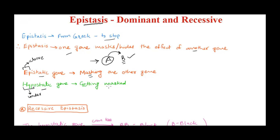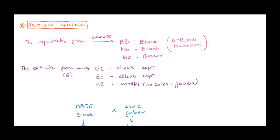There are two main types of epistasis we are going to talk about: dominant epistasis and recessive epistasis. Let's start with recessive epistasis first. To understand recessive epistasis, we'll take the example of pigmentation in Labradors.